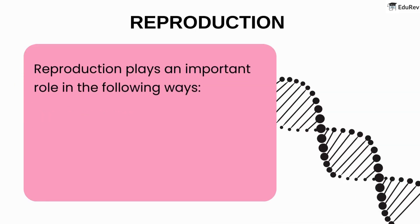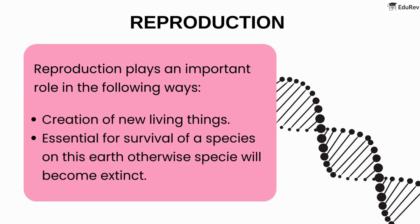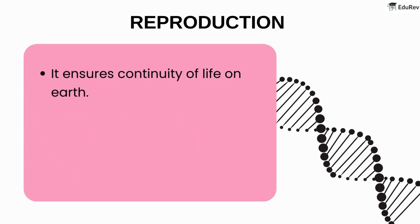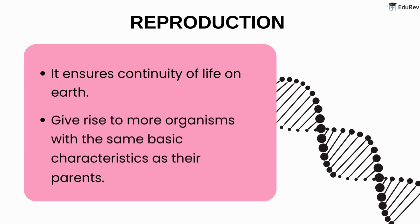Reproduction plays an important role in the following ways: creation of new living things; it is essential for the survival of a species on this earth, otherwise species will become extinct. It ensures the continuity of life on earth and gives rise to more organisms with the same basic characteristics as their parents.